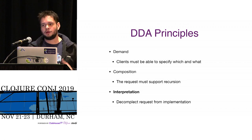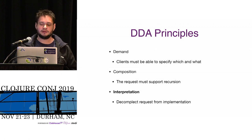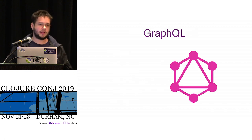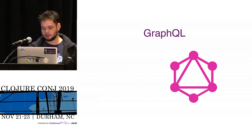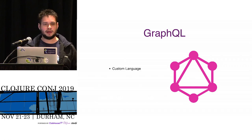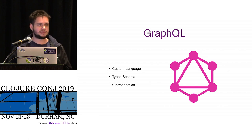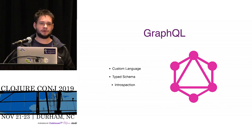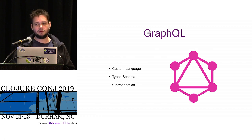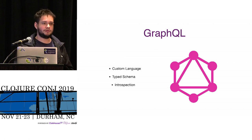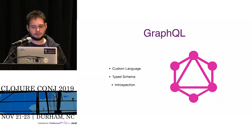A lot of companies were having this problem back then, like Facebook. Facebook came up with GraphQL as a solution. GraphQL is a custom language with a typed schema and supports introspection. That's a feature a lot of developers like, because in the REST world you can just hope the documentation is good. But in GraphQL, because there is an enforced typed schema, you can always ask it to tell you what it has — which enables autocomplete and cool introspection features.